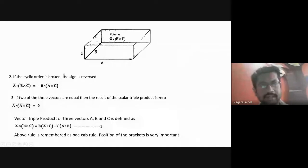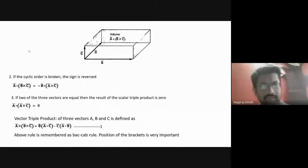In the scalar triple product, if we change the order of the terms — that is, if the cyclic order is broken — the sign will be reversed. That means a bar dot of (b bar cross c bar) will be equal to minus b bar dot of (a bar cross c bar). The sign will be reversed; that is all you have to remember here. The magnitude will be in terms of negative.